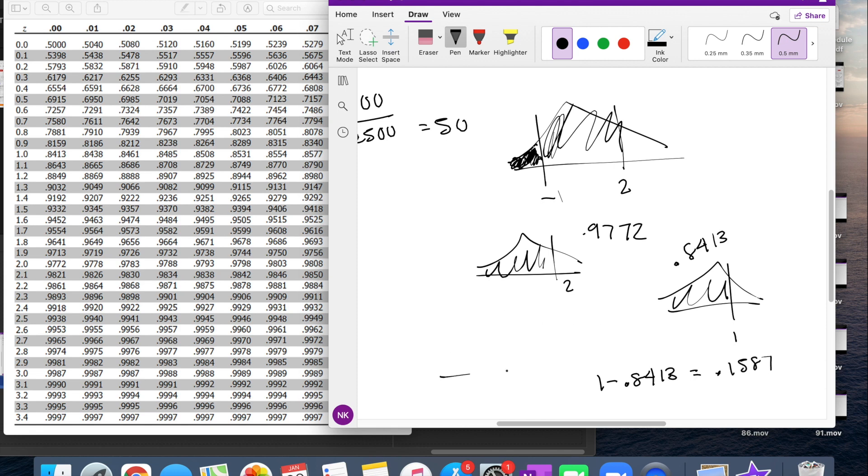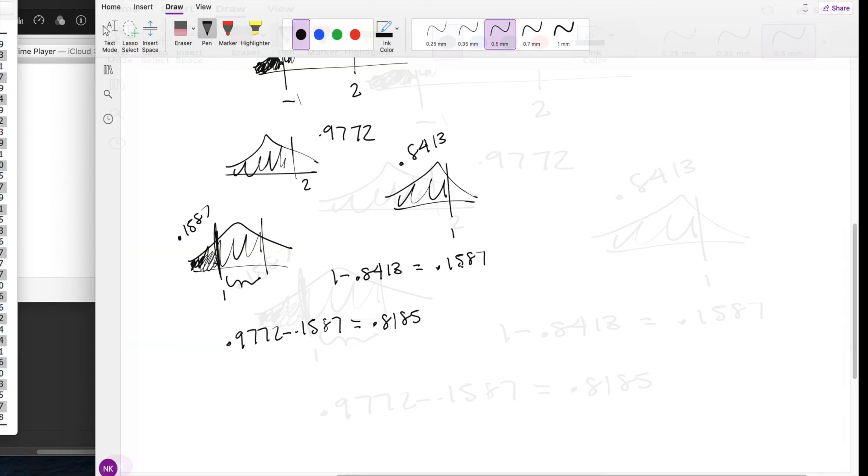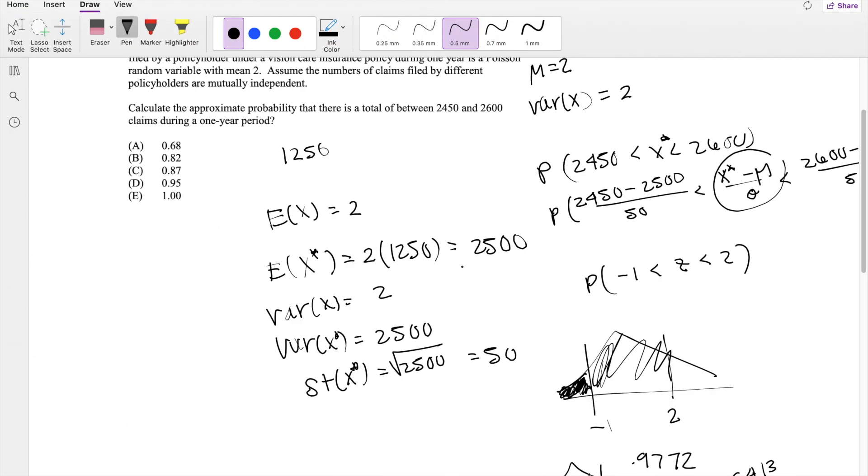And so now we take the 2, this 0.9772, and subtract that little bit, this part right here, which is 0.1587, to get the range that we want, which is this part right here. So that again is 0.9772 minus 0.1587, which is equal to 0.8185, which is our answer B.